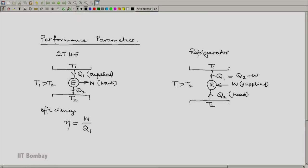So here, the corresponding ratio as a performance parameter will be Q2 by W. And this we call the coefficient of performance. The common symbol is not a symbol, but an acronym short form: it is COP.